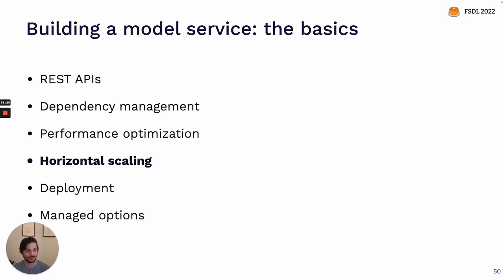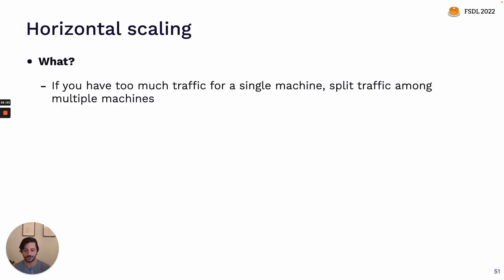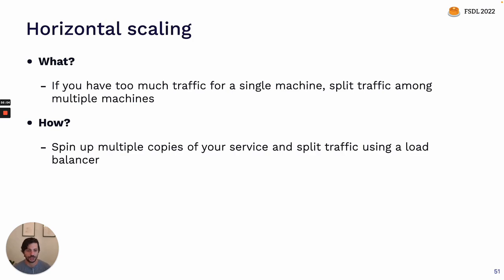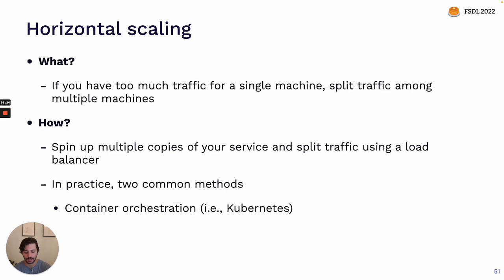We've talked about how to make your model go faster on a single server, but if you're going to scale up to a large number of users, at some point you'll need to scale horizontally — having traffic go to multiple copies of your model running on different servers. If you have too much traffic for a single machine, you'll take that stream of traffic and split it among multiple machines. Each machine will have its own separate copy of your service, and you'll route traffic between these copies using a tool called a load balancer. In practice there are two common methods: container orchestration and serverless.